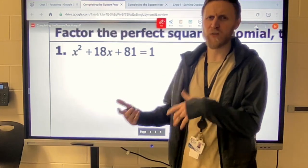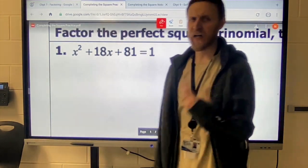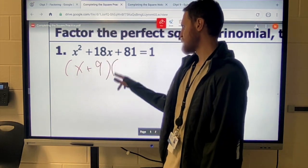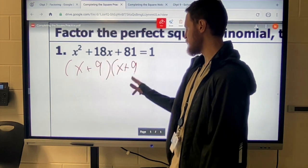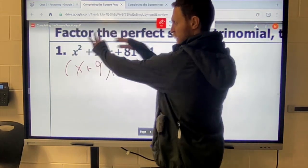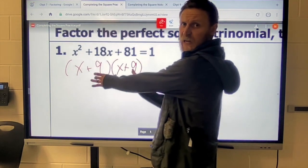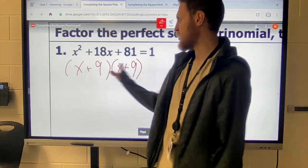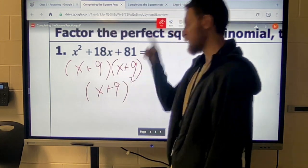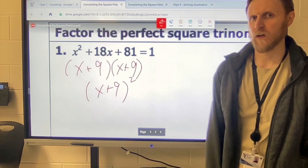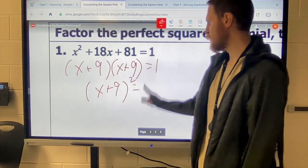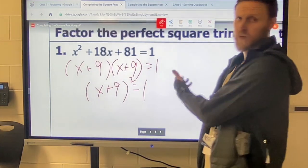So we're looking for two numbers that multiply to be 81, add to be 18, which is 9 and 9. So that's the whole idea behind this entire completing the square thing is that we're dealing with perfect square trinomials, meaning they give us the exact same factors. The beauty of that is that we can rewrite that as x plus 9 squared. Right. Hopefully we picked up on that last time.